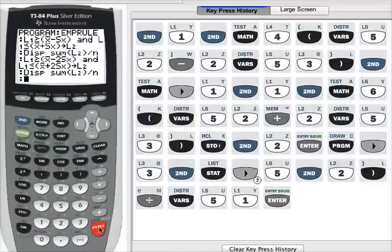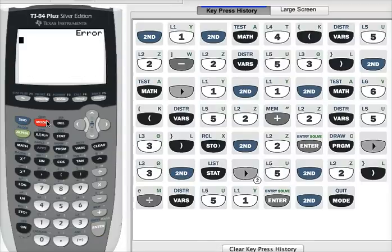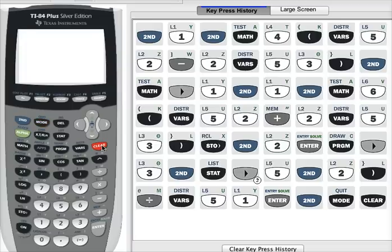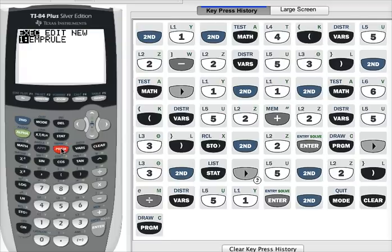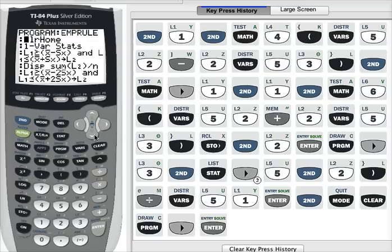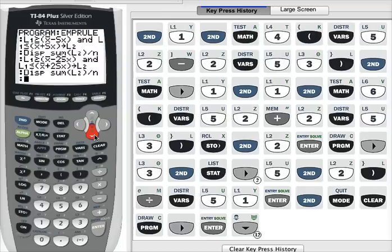Once you are done writing the program, you don't have to worry about saving. Once you are done writing the program, it is automatically saved. So you can press second quit and go back to the home screen. To get back to your program, press the program button. If you want to edit that program, you can press the right arrow to select edit and press enter, and it will take you right back to where you started. At the bottom of the handout, it tells you how to check your program. Good luck.